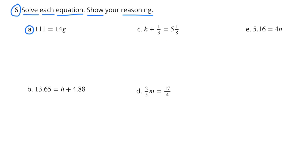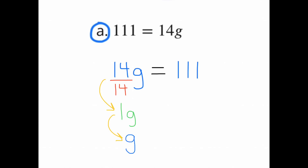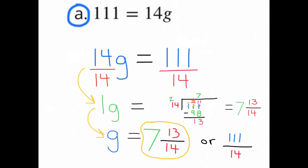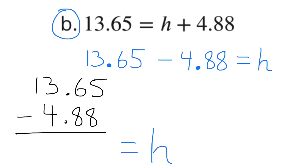Number 6: Solve each equation. Part A: 111 equals 14G, rewritten as 14G equals 111. Dividing both sides by 14 gives G equals 111 divided by 14. Part B: 13 and 65 hundredths equals H plus 4 and 88 hundredths. Rewriting: H equals 13.65 minus 4.88, and the difference is 8 and 77 hundredths. So H equals 8 and 77 hundredths.